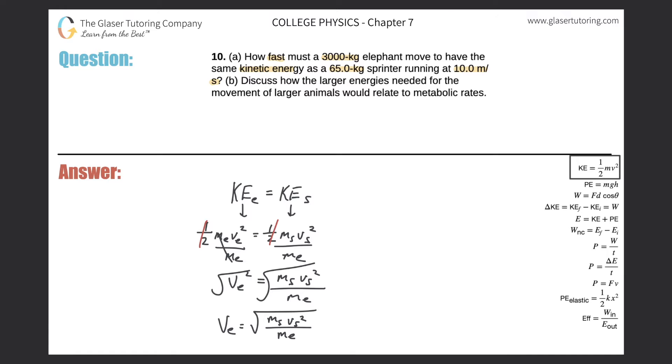So now all we have to do is plug in. So the velocity of the elephant is equal to the mass of the sprinter. So they told us it was 65 kilograms. The velocity of the sprinter was 10 meters per second. That's squared. All divided then by the mass of the elephant, which was 3,000 kilograms.